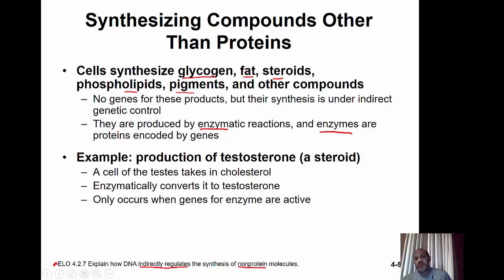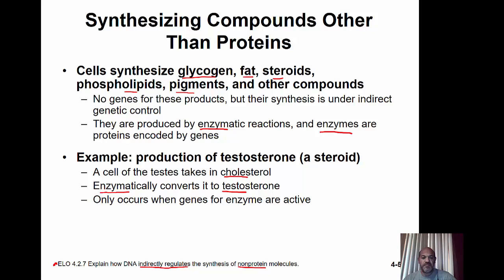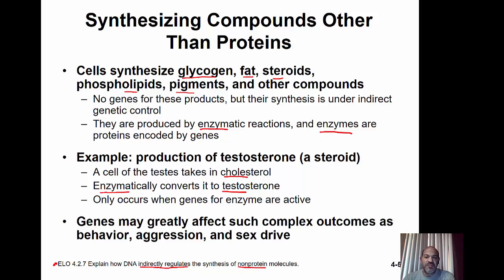This only happens if the gene for the enzyme is active — the gene for the enzyme converting cholesterol to testosterone must be turned on. This indirect control of non-protein molecule production is fascinating. What's even more fascinating is that genes can have effects beyond protein production — for example, the genes responsible for producing testosterone also influence complex behaviors like aggression and sex drive.